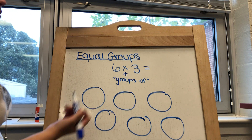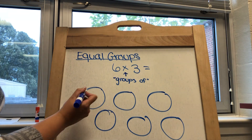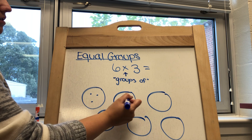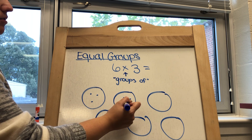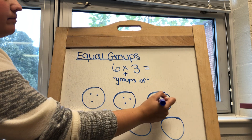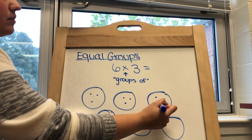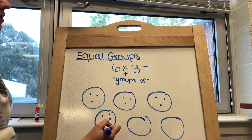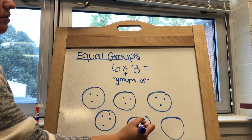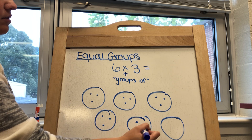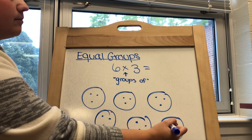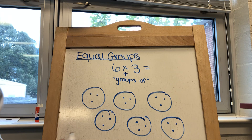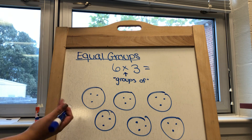Then I would have three in each group — one, two, three in each of the six groups.